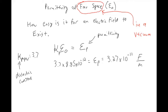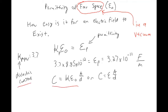Looking back at our equation for capacitance, we could write it either as C = κε₀A/d, or as C = εA/d where ε is the permittivity of the material. To figure out which equation to use, you read the problem — if it gives you a dielectric constant, use the first equation; if it gives you the permittivity of the material, use the second.